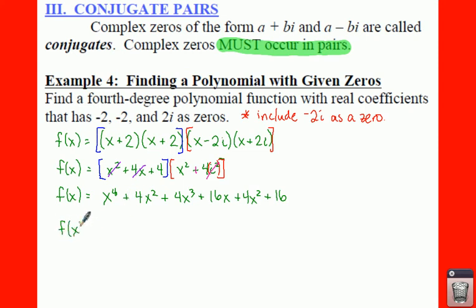Now we just need to clean all this up. And we get x to the 4th. We have our x cubed, so we have a 4x to the 3rd. And then we have 2, 4x squared. So we get an 8x squared, plus 16x, plus 16.